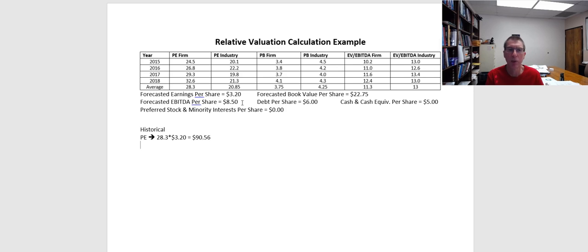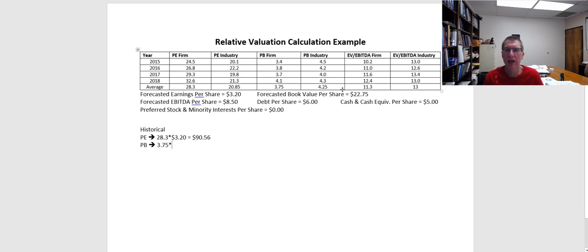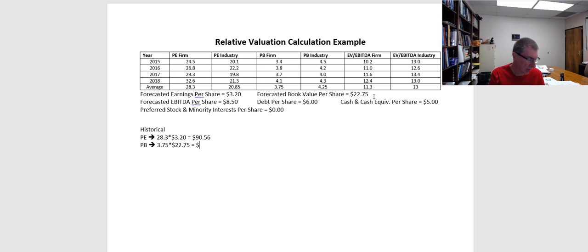Next, we go to the price-to-book multiple. The multiple for our firm on average has been 3.75. Our forecasted book value is $22.75. So we multiply those together and we get a price of $85.31.